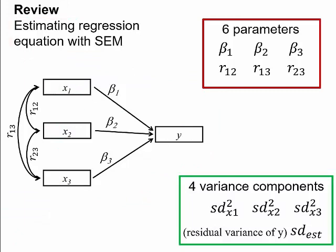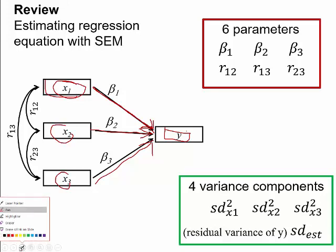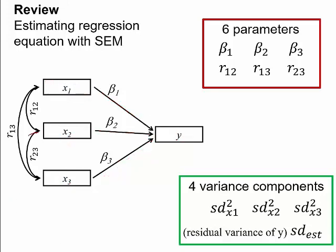When we draw a picture, we put our x variables and y variable in boxes, and we use straight lines with arrows to indicate a regression relationship — x1 predicts y, x2 predicts y, x3 predicts y. We also have curved lines with double arrows, one on each end, and those represent correlations: x1 can correlate with x2, x2 with x3, and x1 with x3.